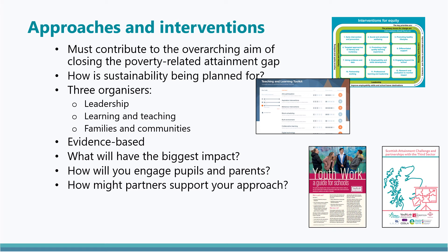Schools should consider which interventions will have the greatest impact. Resources such as the Interventions for Equity Framework from the National Improvement Hub and the Education Endowment Foundation's Teaching and Learning Toolkit provide examples of successful, evidence-based approaches to support schools when planning their own interventions. Parents, carers and pupils should be involved in the planning process, with schools ensuring that this is done in a way that is not stigmatising. Participatory budgeting is one mechanism that can be used to support this engagement. Schools should also consider how other partners can support their work, and further guidance on working with partners and on recruitment of additional staff and procurement is contained within the National Operational Guidance.